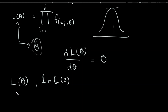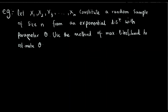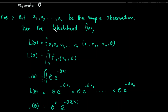For example, we have exposed this variable. So we have x1, x2, ..., xn as random samples of size n from an exponential distribution with parameter theta. So we have to use the theta parameter to estimate using the method of maximum likelihood.